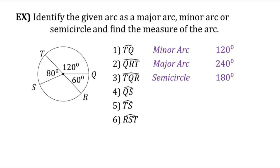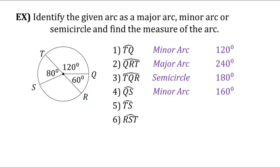Next, arc QS is the arc highlighted in green. You might ask why I chose that portion of QS versus the other portion — anytime you have only two letters in an arc, that means it's a minor arc and you always go the shortest distance between those two letters. Here, the shortest distance is the bottom portion of the circle. To find the measure of QS, we do 360 minus 80 minus 120. So QS is a minor arc with a measure of 160 degrees.